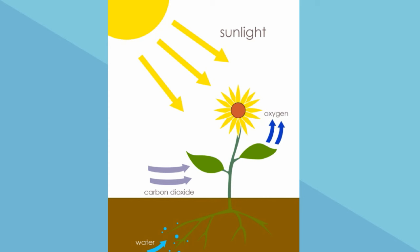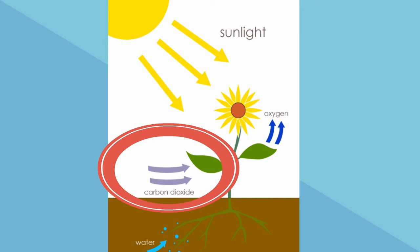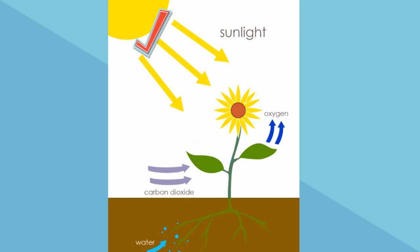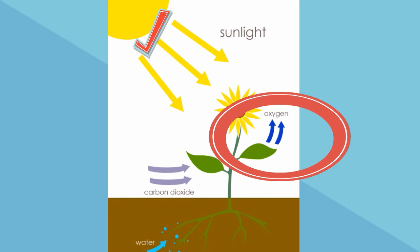What is needed for photosynthesis includes carbon dioxide, sunlight, and water. What is made is oxygen and glucose.